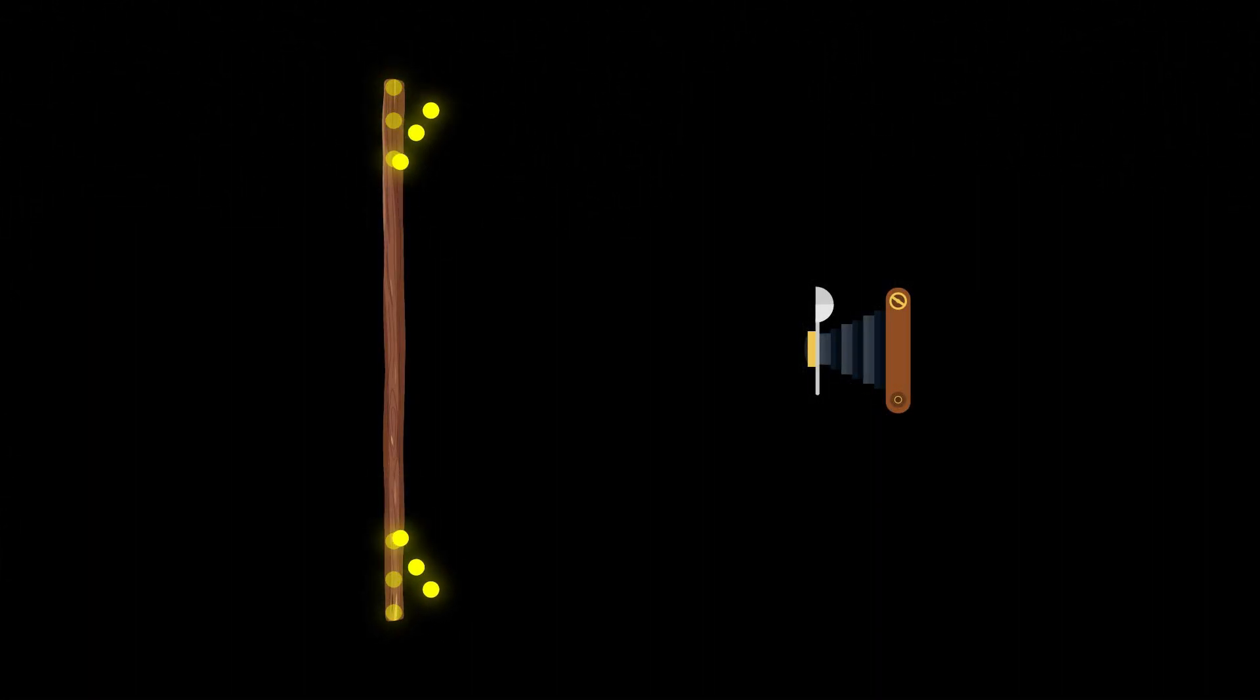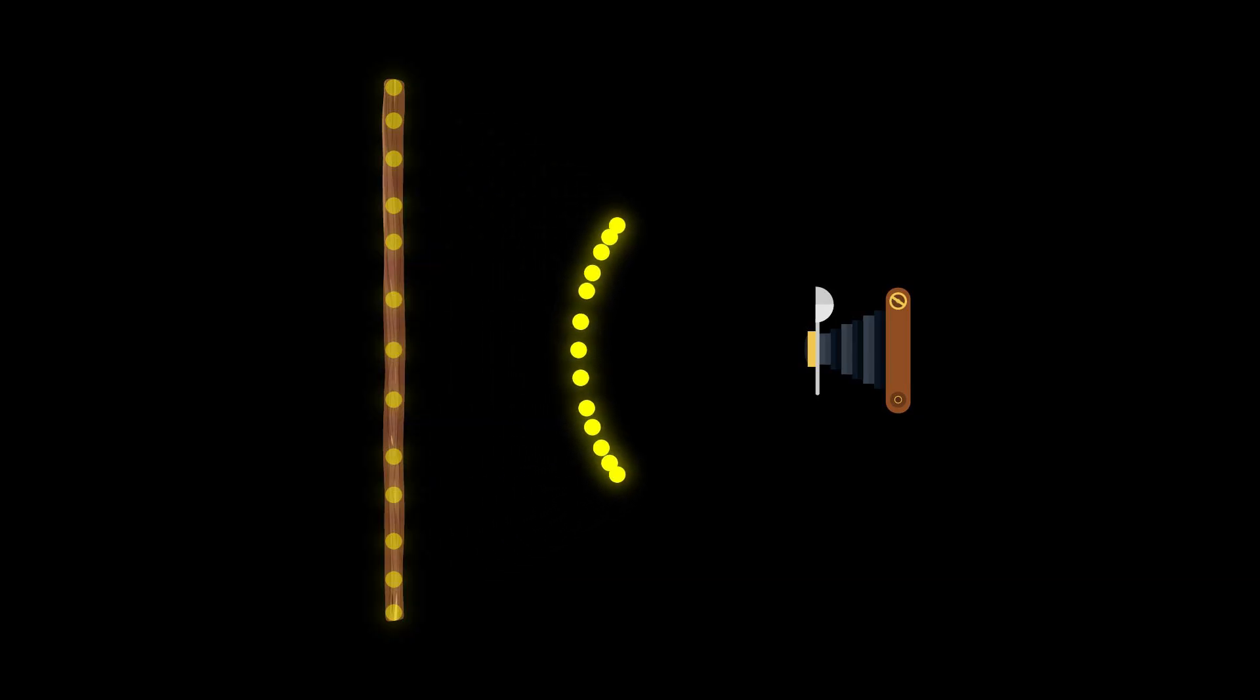When stationary, all photons it emits originate from the same position along the z-axis, so it appears straight in an image taken by the camera.